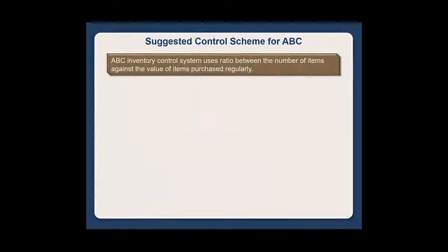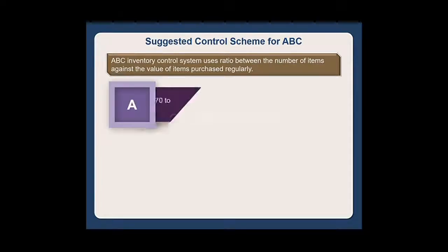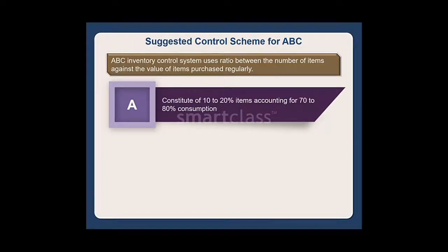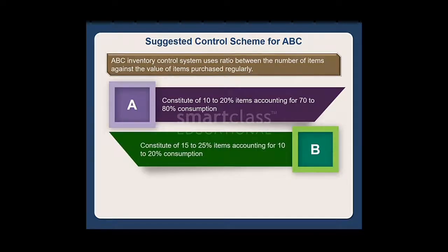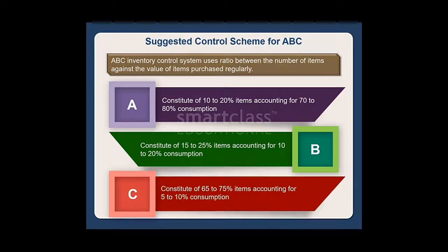The ABC inventory control system uses a ratio between the number of items against the value of items purchased regularly. Class A items constitute 10–20% of items, accounting for 70–80% of consumption. Class B items constitute 15–25% of items, accounting for 10–20% of consumption. And lastly, Class C items constitute 65–75% of items, accounting for 5–10% of consumption.